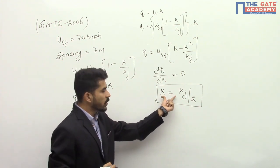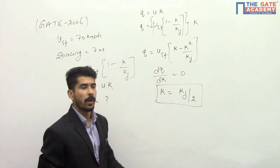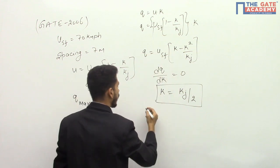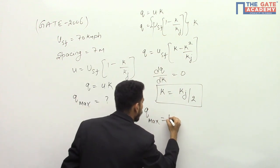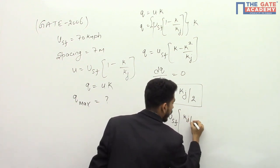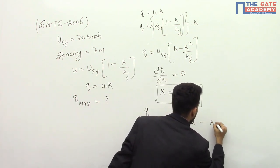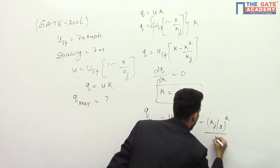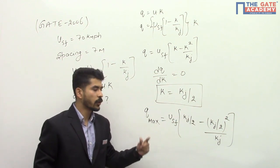What you have to do is on substituting this value of k, at this value of k your q will be maximum. So we know q equal to this, substitute k equal to kj by 2 in this expression, you will get q equal to q max. So q max will be equal to usf into kj by 2 minus kj by 2 whole square divided by kj. This will give you the value of q max.